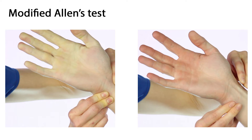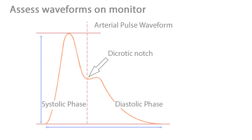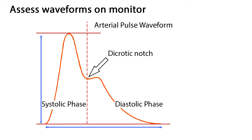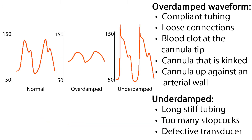When monitoring a patient with an arterial line, the monitor will show waveforms in red. The systolic phase is when the heart contracts. The dicrotic notch reflects the closure of the aortic valve, and the diastolic phase is the pressure going down in diastole.